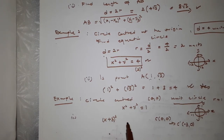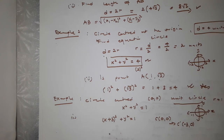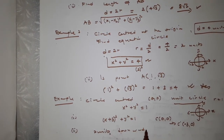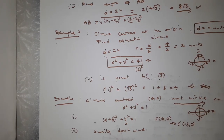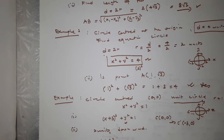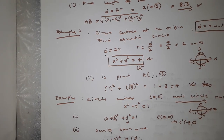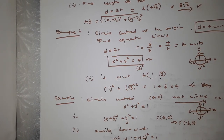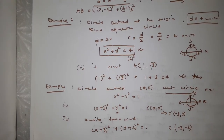Shifting 3 units to the left changes the center from (0, 0) to (−3, 0), and the equation becomes (x + 3)² + y² = 1 — note it is plus 3, not minus 3. Then the circle is also shifted 2 units downwards, so the y term participates: (x + 3)² + (y + 2)² = 1. The radius does not change; it is just the circle that is shifted. The new center is (−3, −2).